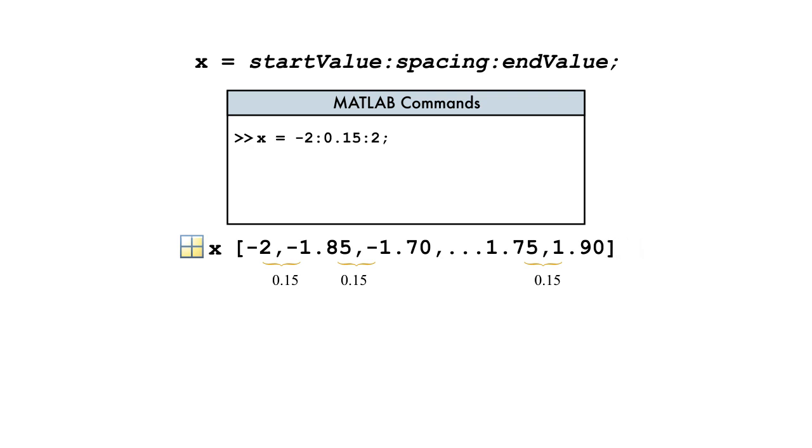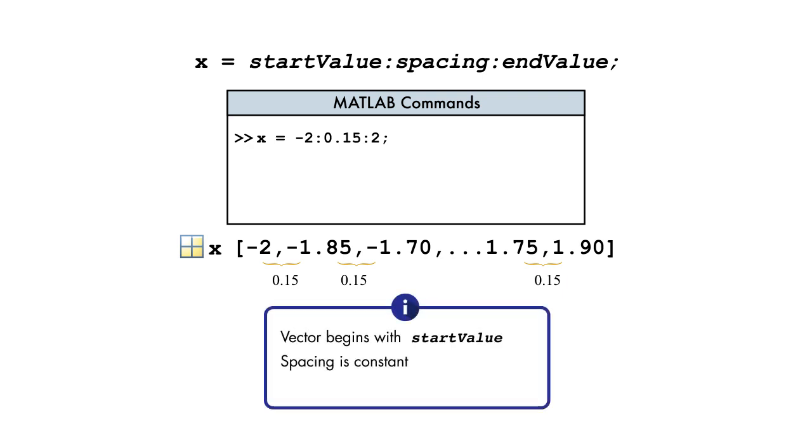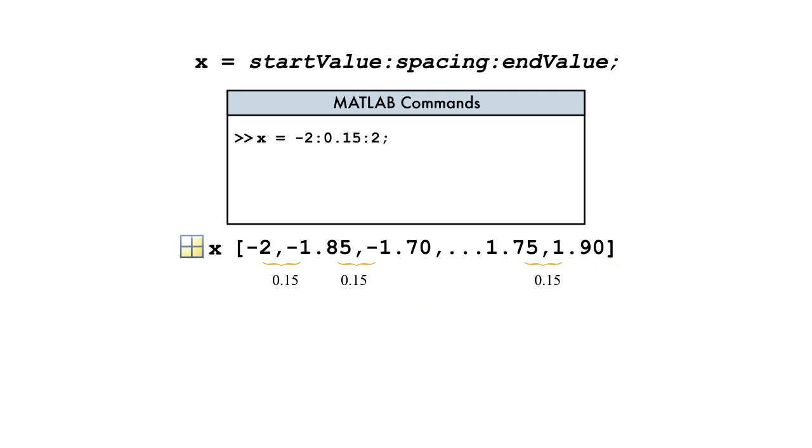When using the colon operator, the defined starting value is included, and the vector will contain equally spaced numbers up to and possibly including the end value, but not beyond. Since 1.9 plus 0.15 is greater than 2, the last value in this vector is 1.9.